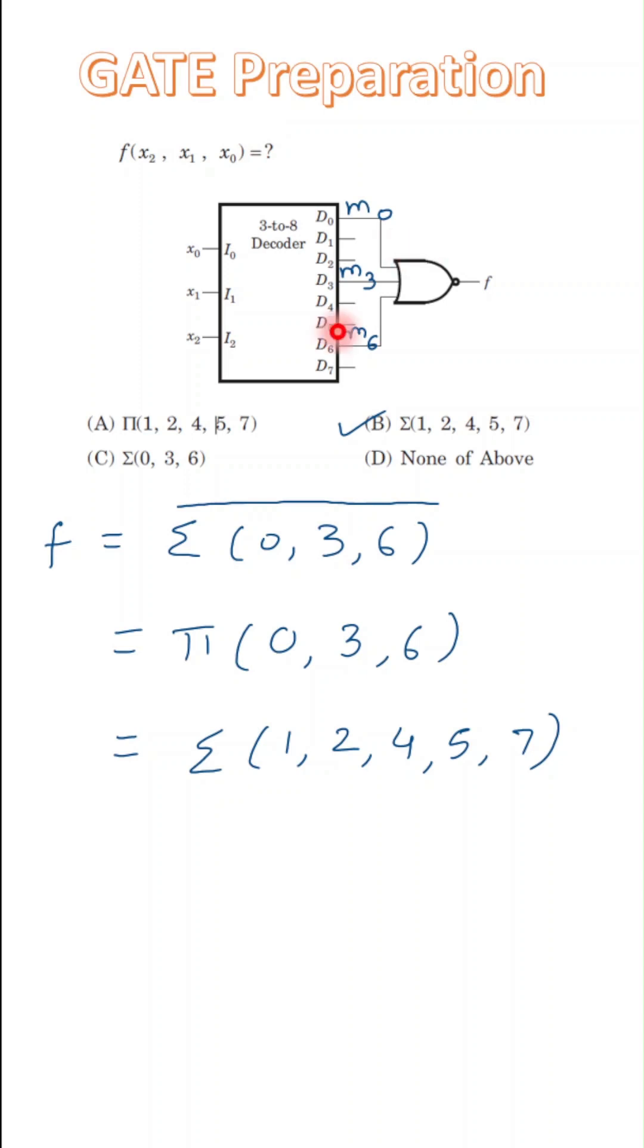This is a problem related to a decoder, and here the decoder size is 3 to 8. So 3 are the input lines, 8 are the output lines, and each individual output line is represented: D0 represents M0, D1 represents M1, D2 is M2, and D7 is M7.